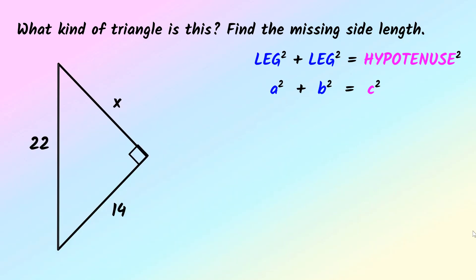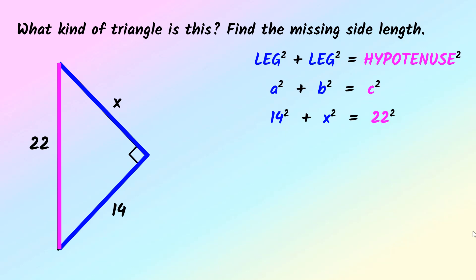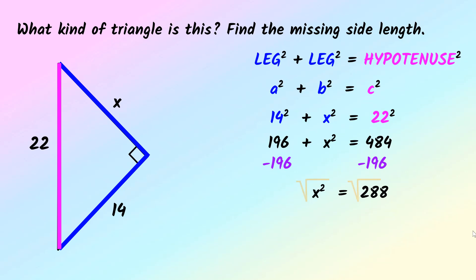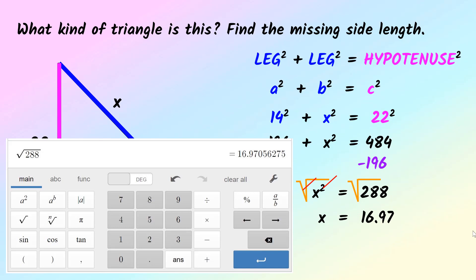Time to try one on your own. First identify which sides are the legs and which is the hypotenuse to substitute into the Pythagorean theorem. X is a leg, 14 is a leg, and 22 — the side across from the right angle — is the hypotenuse. When you substitute in, you get 14 squared plus X squared equals 22 squared. Evaluate the squares: 14 squared is 196 and 22 squared is 484 — you may need a calculator. Subtract 196 on both sides to get X squared equals 288. Square root both sides, and X equals 16.97 rounded to two decimal places.